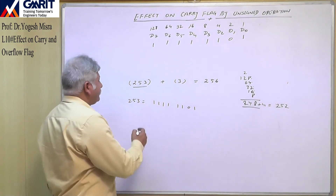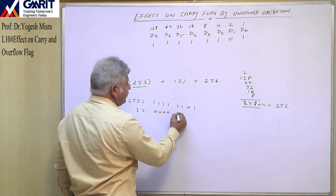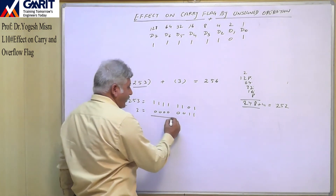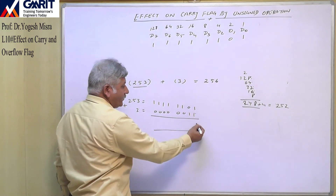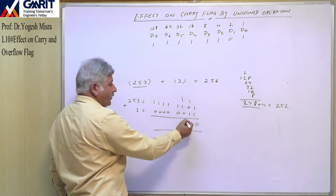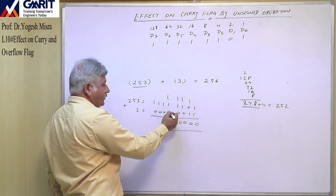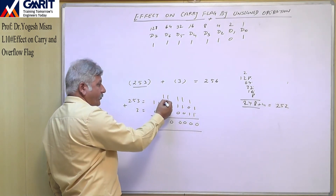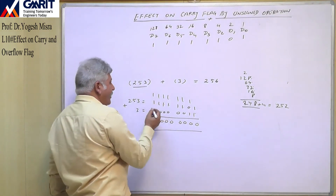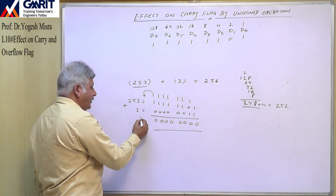And 3 is represented by 00000011. If we add these two numbers, each column produces 1 plus 1 = 0 with carry 1, propagating through all 8 bit positions. After all additions, there is a final carry out from the most significant bit.